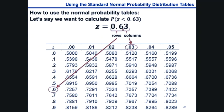And the intersection of the row and the column gives the probability of interest.